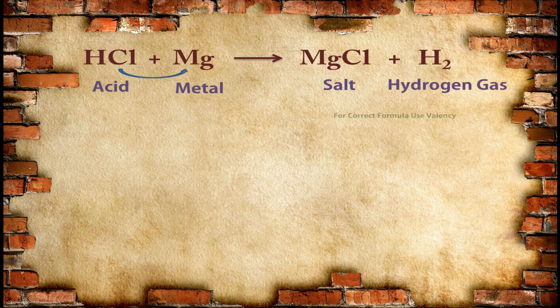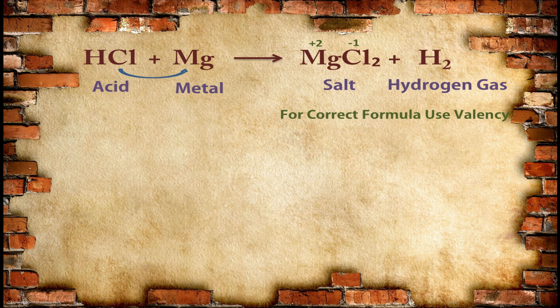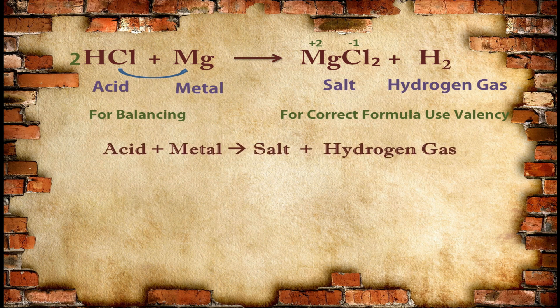For the correct formula, use valency. The valency of magnesium is +2 and the valency of chlorine is −1. So the formula of this salt will be MgCl₂ — when these valencies interchange, the formula becomes MgCl₂. We don't write 1, so the formula is MgCl₂. Now follow the third step for balancing: balance Cl and H₂ by writing 2 with HCl. So whenever any acid reacts with metal, always salt and hydrogen gas forms.